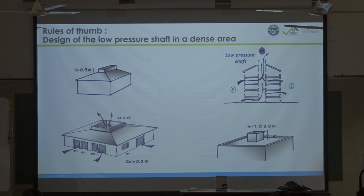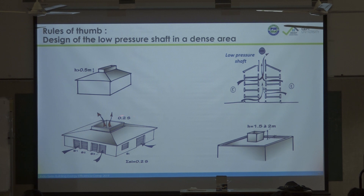Some rules of thumb: what is the height of the shaft and what is the surface? For a sloped roof, you need a height of at least 50 centimeters — 1 meter is better. The shaft area must be at least 20 percent of the total surface of the building. For a terrace roof, you need at least 2 meters height — 3 meters is better.